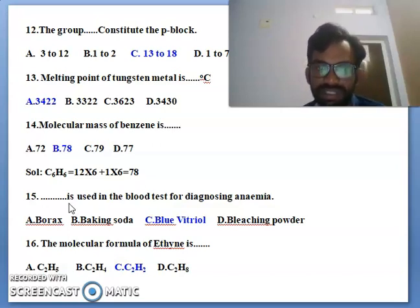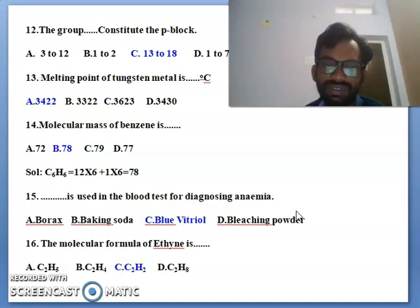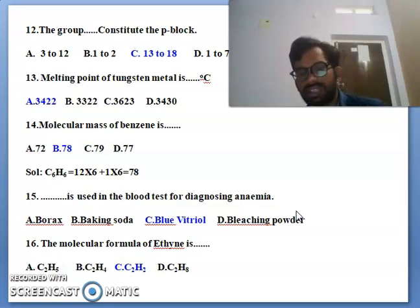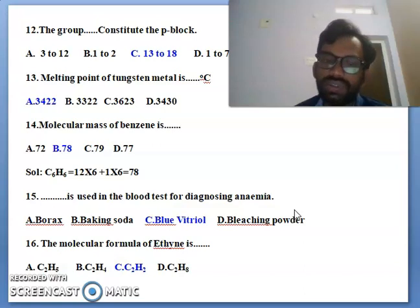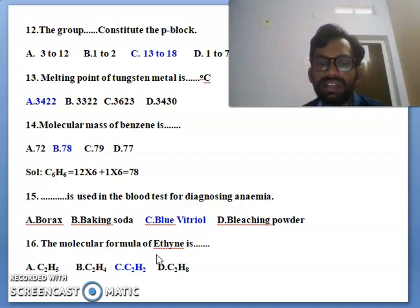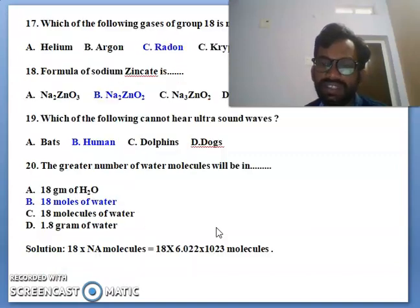Next 15th one: is used in the blood test for the diagnosing anemia. So is used in the blood test for diagnosing anemia. So here blue vitriol is used in blood testing diagnostic anemia. You can see the 16th one, the molecular formula of ethyne, ethyne. So C2H2 is the molecular formula of ethyne.